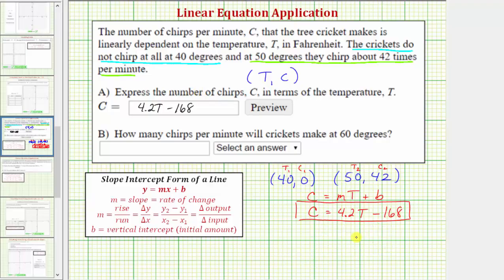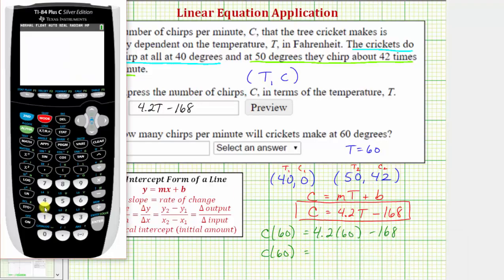Now for part B, we're asked to determine how many chirps per minute will the crickets make at 60 degrees. Using our equation, we want to find the value of C when T equals 60. So we'd have C of 60, which equals 4.2 times 60 minus 168. Let's find this function value on the calculator. 4.2 times 60 minus 168 equals 84.